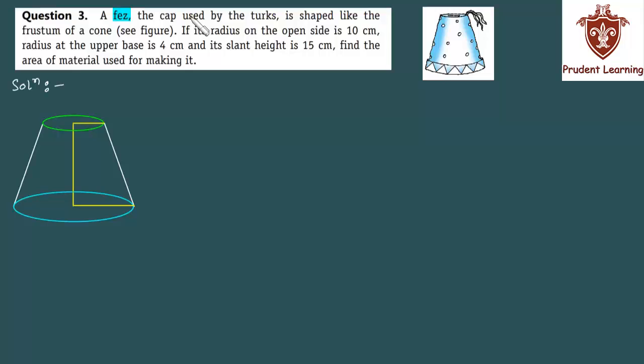A Fez, the cap used by the Turks, is shaped like a frustum of a cone. If its radius on the open side is 10 cm, radius at the upper base is 4 cm, and its slant height is 15 cm, find the area of the material used for making it.